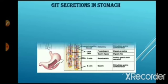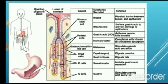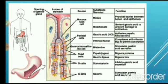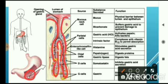GIT secretion in the stomach. Here we can see the lumen of the stomach, where there is a presence of gastric glands and their openings. The photograph shows the outer wall of the stomach and a zoomed figure, where we can see the different types of cells, their secretions and their functions.